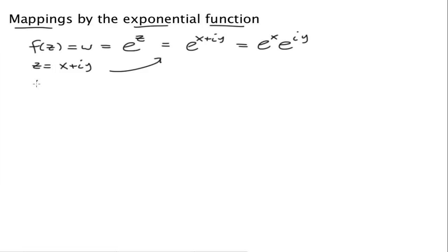And we can write w now in terms of polar coordinates, and we're going to call it ρe to the iφ, where ρ is the modulus and φ is the argument. We can clearly see that ρ is equal to e to the x, and φ is equal to y.